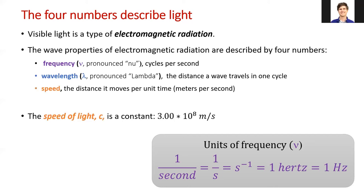You probably already know that the speed of light is a constant at 3 times 10 to the 8th meters per second. This is about 5 million miles per second.